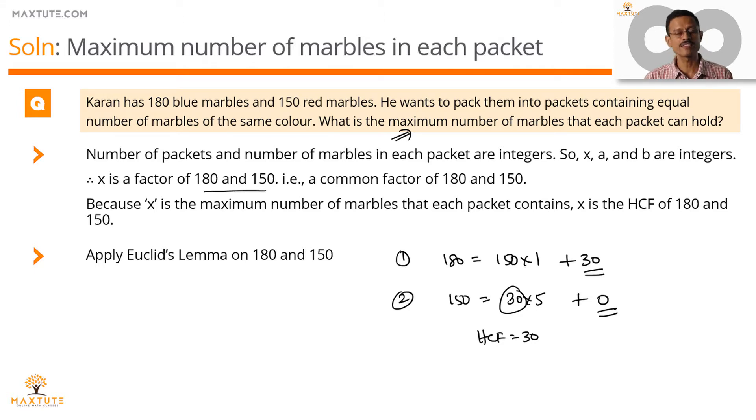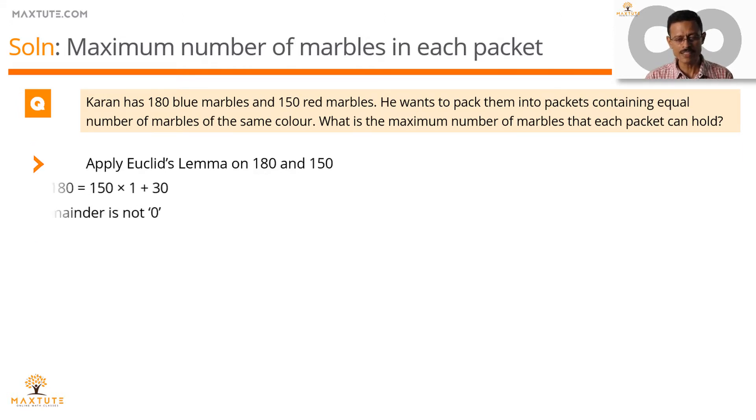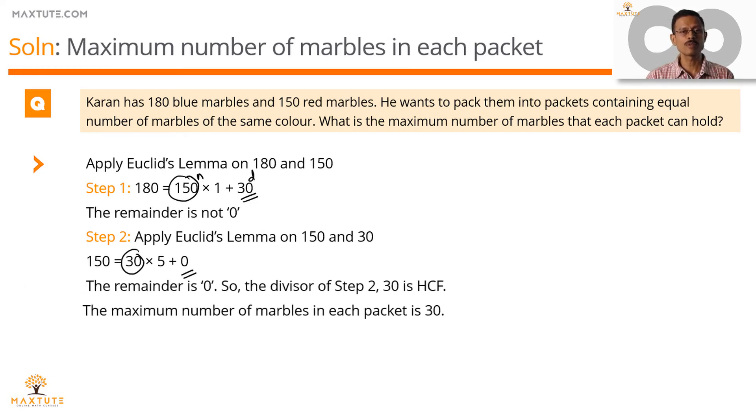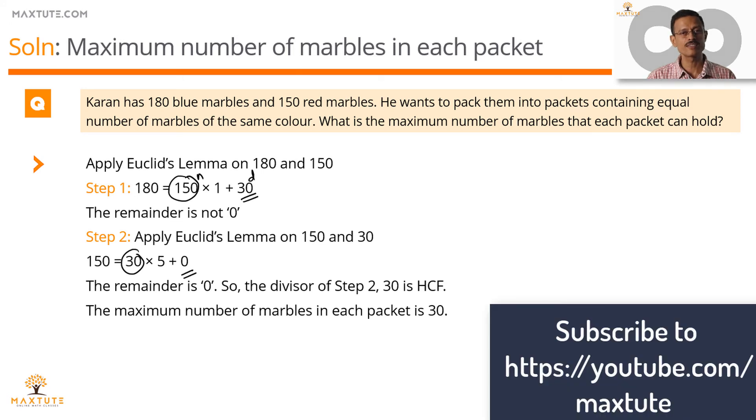Quickly summarize the computation of the HCF in a printed form. Apply the division lemma. First step, you get a remainder of 30. Therefore, if the remainder is not 0, apply it recursively. Only that you'll be using 150 as your dividend and 30 as your divisor. Second step, you got a remainder of 0. So divisor of this step 30 is the HCF. The maximum number of marbles that each packet can hold is 30.